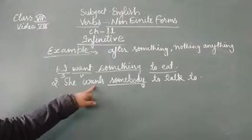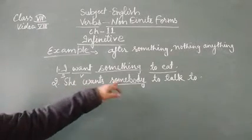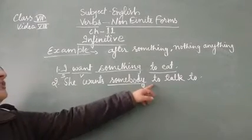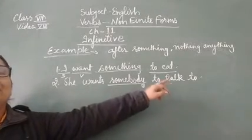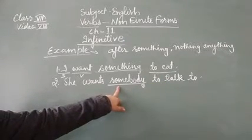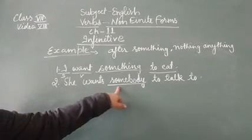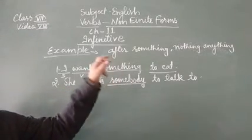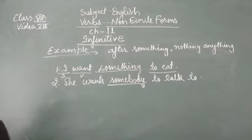The same way, she wants somebody to talk to. Here also, before infinitive, to talk means it is an infinitive. And before this infinitive, we are using somebody. So the sentence would be, she wants somebody to talk to. These type of sentences would be seen for the use of infinitive.